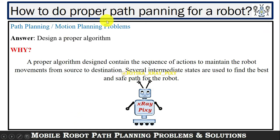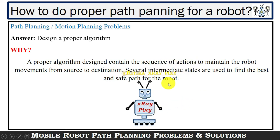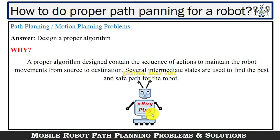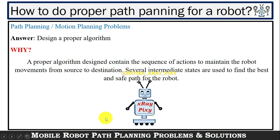So how do we do proper path planning for a robot? The answer is to design a proper algorithm. A proper algorithm design contains a sequence of actions to maintain robot movements from source to destination, using several intermediate stages to find the shortest path. In short, we can use an optimization algorithm to find the optimum path from source to destination, which includes a sequence of actions — or several intermediate stages — that will be discussed in upcoming slides.